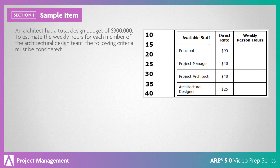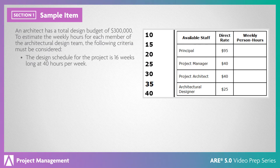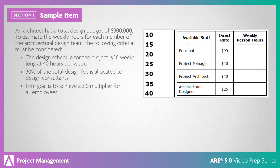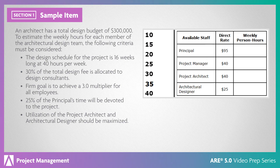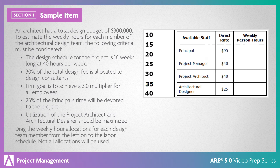An architect has a total design budget of $300,000. To estimate the weekly hours for each member of the architectural design team, the following criteria must be considered: the design schedule for the project is 16 weeks long at 40 hours per week; 30% of the total design fee is allocated to design consultants; firm goal is to achieve a 3.0 multiplier for all employees; 25% of the principal's time will be devoted to the project; utilization of the project architect and architectural designer should be maximized. Drag the weekly hour allocations for each design team member from the left onto the labor schedule. Not all allocations will be used.